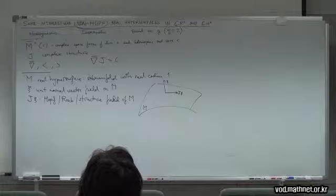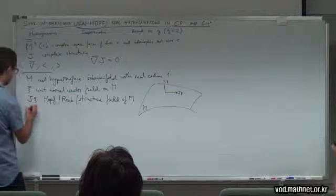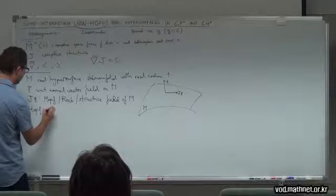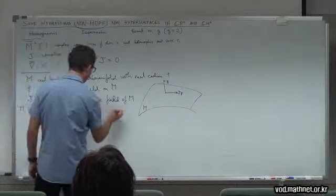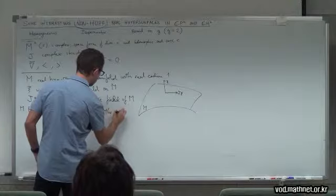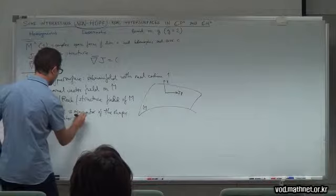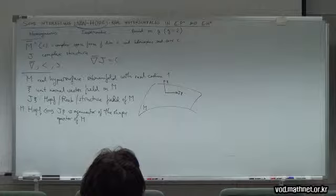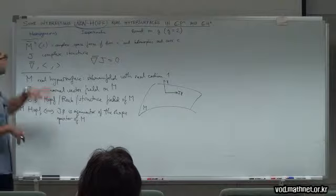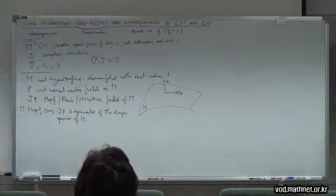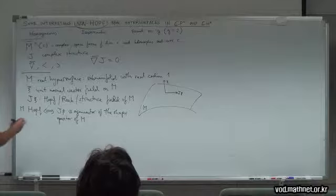Now we have the first important definition: the definition of Hopf hypersurface. We say that M is Hopf if Jξ, the Hopf vector field, is an eigenvector of the shape operator, or Weingarten map of M, at every point. If we want to study non-Hopf real hypersurfaces, it's good to introduce a function that plays an important role — a role similar to G, but even more important in the setting of complex space forms.